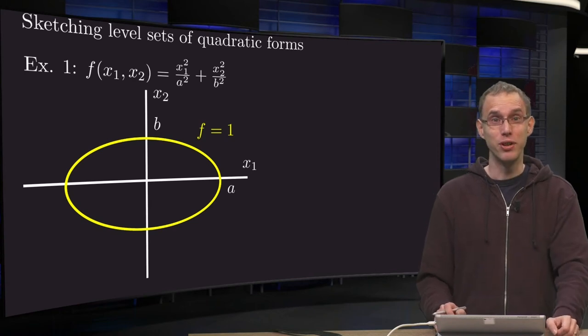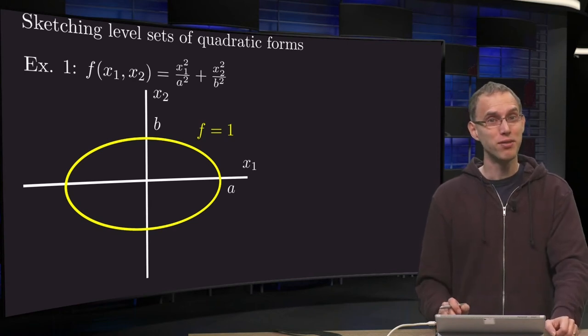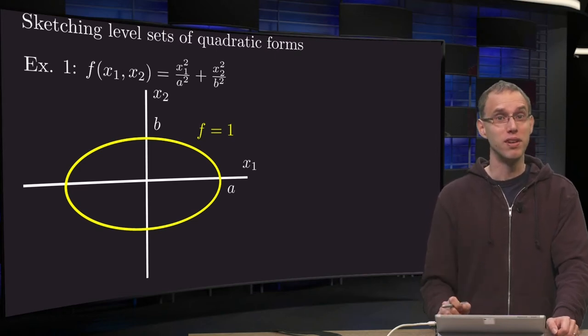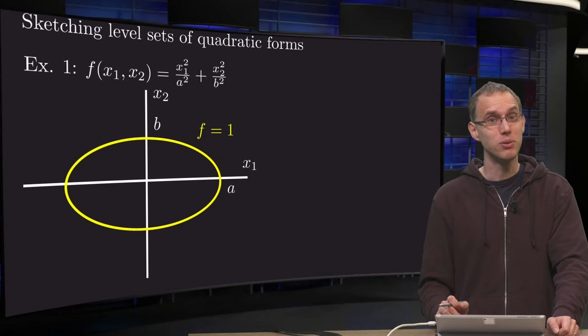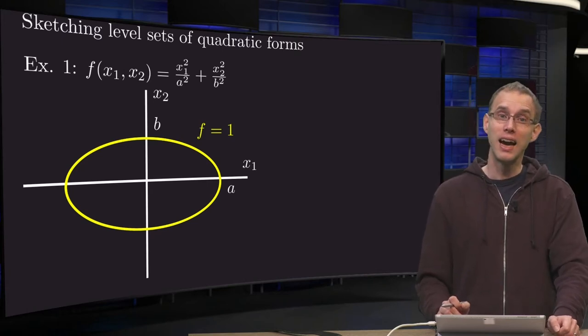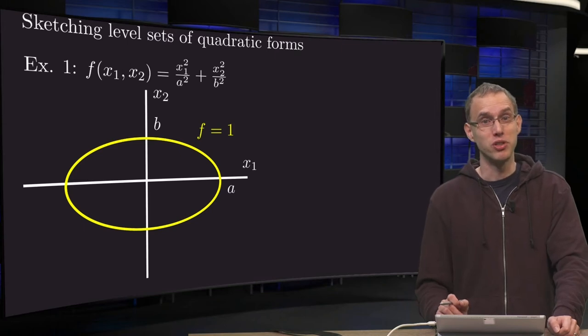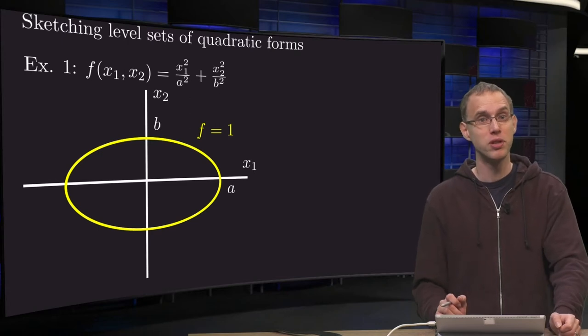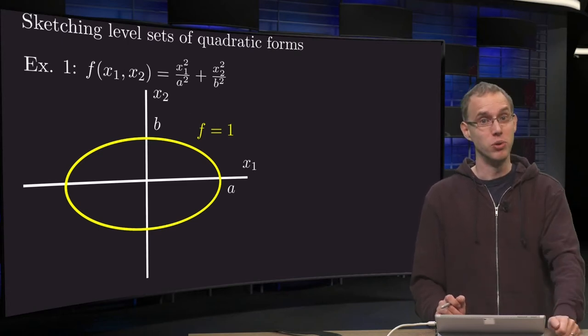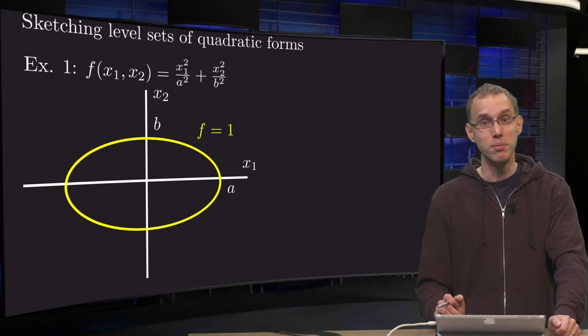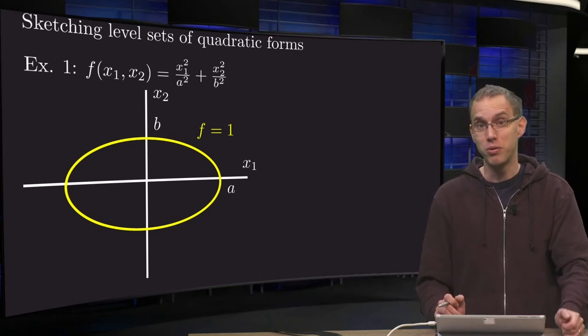Using the principal axis theorem, we can always get rid of the mixed terms in our quadratic forms. So for sketching of level sets, we only need to look at quadratic forms without these mixed terms. In this video we will turn our attention to sketching of level sets. We will restrict ourselves to quadratic forms in two variables, so we can sketch in 2D. Otherwise, we would need to make 3D pictures, which can be quite difficult to draw.